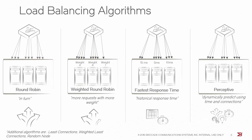Load balancing algorithms control how the pool distributes traffic across its nodes. The round robin algorithm distributes traffic by assigning each request to a new node in turn. Over a period of time, all of the nodes will receive the same number of requests.